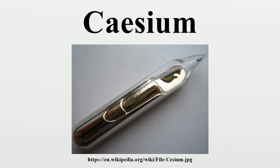Cesium is a very soft, very ductile, pale metal which darkens in the presence of trace amounts of oxygen. It has a melting point of 28.4 degrees Celsius, making it one of the few elemental metals that are liquid near room temperature. Mercury is the only elemental metal with a known melting point lower than cesium.